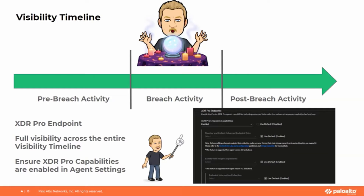Even the actions the adversary takes to cover their tracks — clearing event logs, deleting files, hiding in areas people normally wouldn't look — you see everything the adversary is doing, and everything occurring after they've left in post-breach activity mode. In your agent settings, make sure you're highly recommending XDR Pro as the licensing they should get, and then go into the agent settings in your agent profile and enable XDR Pro endpoint capabilities.